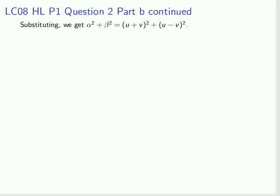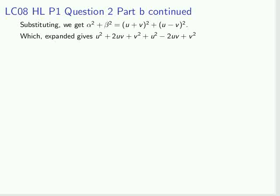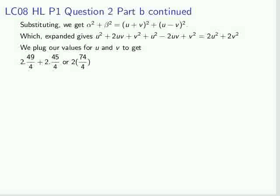Now, at the moment we have to get α² + β². So we can express that in terms of u and v. We expand out the squares. There are some cancellations. We get 2u² + 2v². And then we can plug in our values for u and v there, and we get the answer fairly quickly as 47.